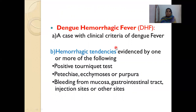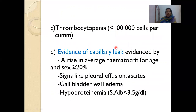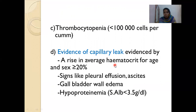In dengue hemorrhagic fever, we will have criteria for dengue fever, hemorrhagic tendencies, thrombocytopenia of less than 1 lakh, plus evidence of capillary leak — rising hematocrit, pleural effusion, gallbladder wall edema on point-of-care ultrasound (POCUS), or hypoproteinemia with serum albumin less than 3.5 g/dL.